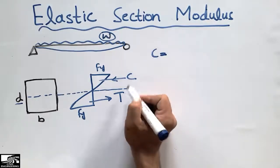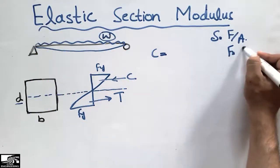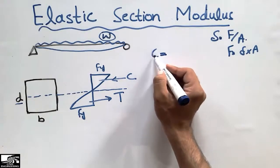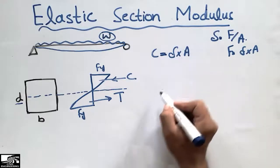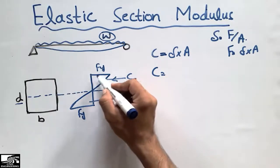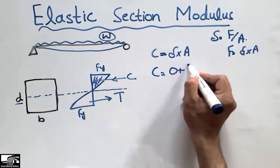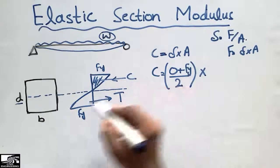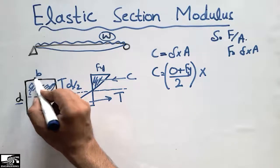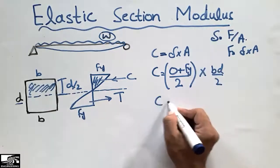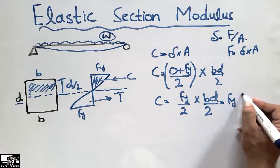We are now interested to find the compression and tension forces. The compression force C is equal to stress times area. The stress in this case is the average of the triangular stress block, which equals (0 + Fy) / 2. The area of the compression section has depth D/2 and width B, so area equals B·D/2. Simplifying: C = (Fy/2) × (B·D/2) = Fy·B·D/4.